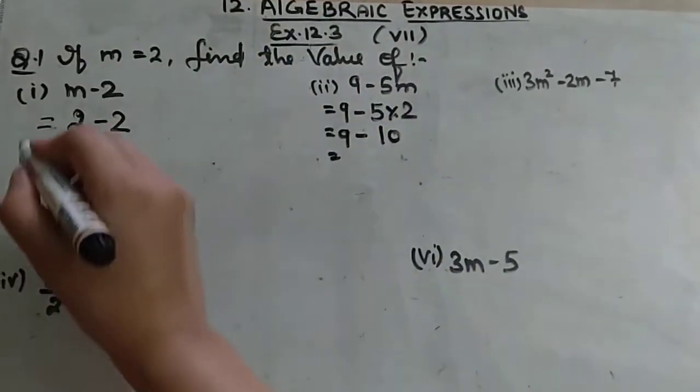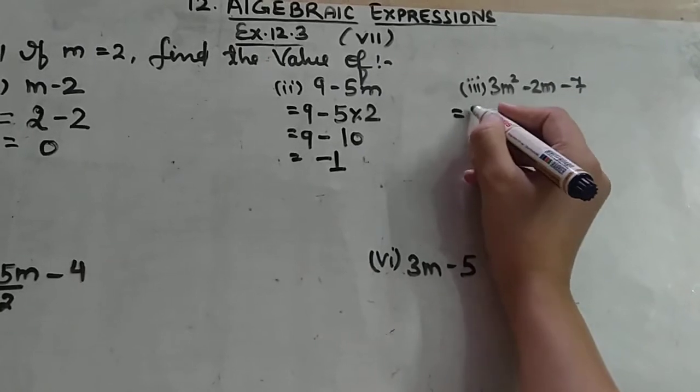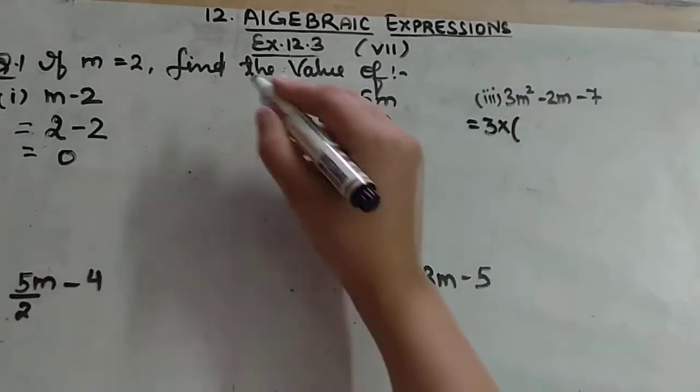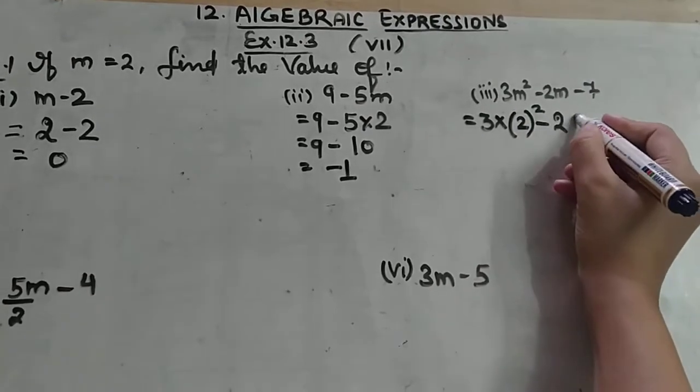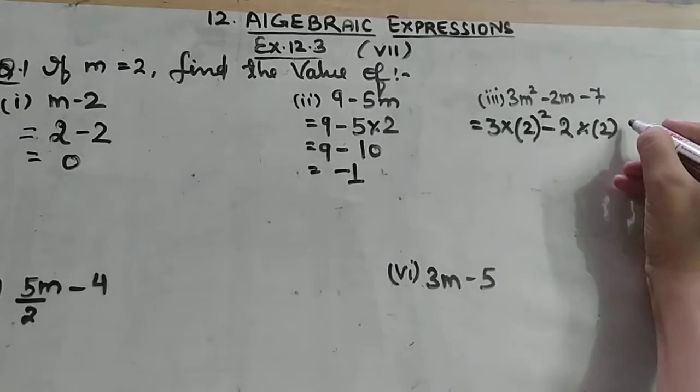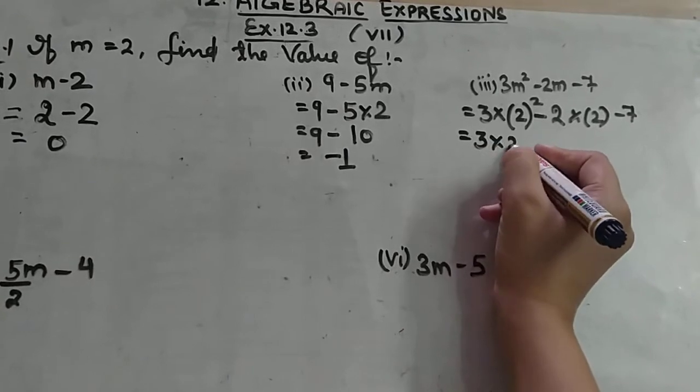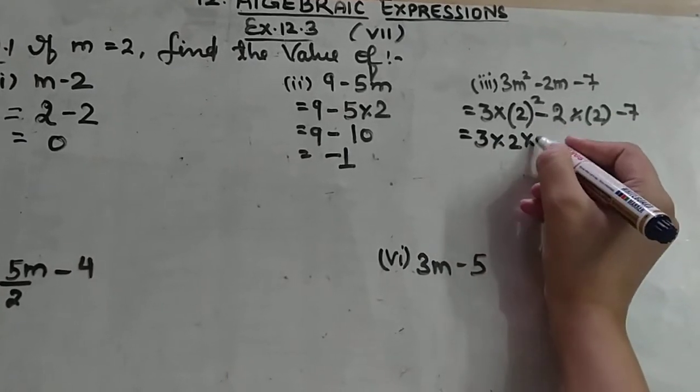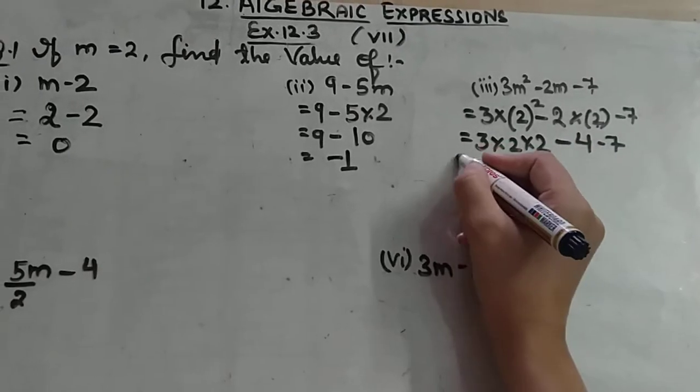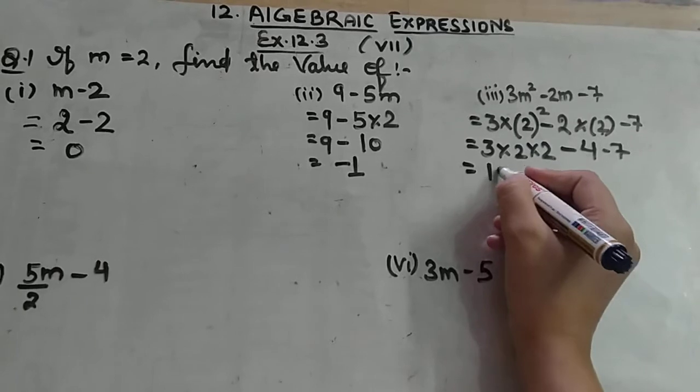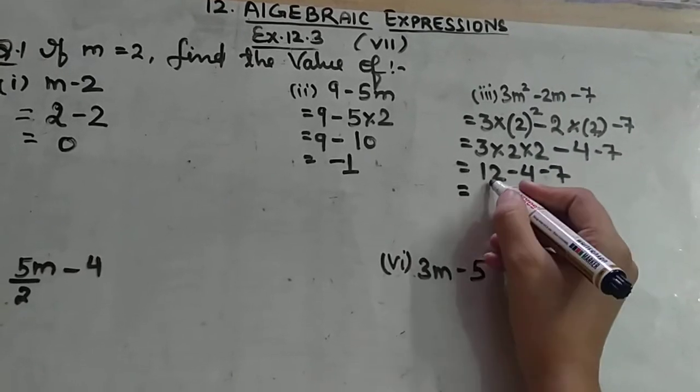Here again, 3 multiply m. M's value is 2 to the power 2. Again minus 2 multiply 2 minus 7. We have 3 multiplied by 2 to the power 2. 2 to the power 2 means 2 times 2, which is 4, minus 7. This becomes 3 into 4 is 12 minus 4 and minus 7. 12 minus 4 is 8.